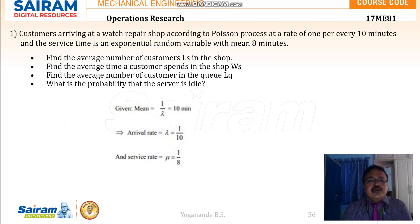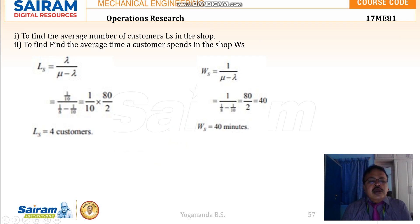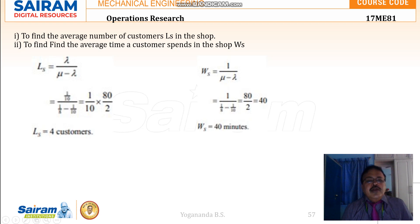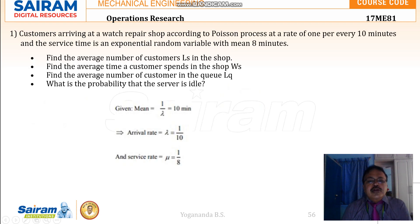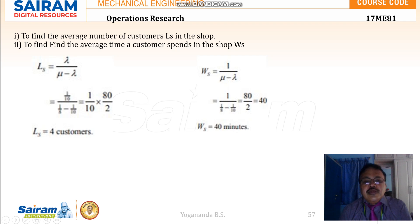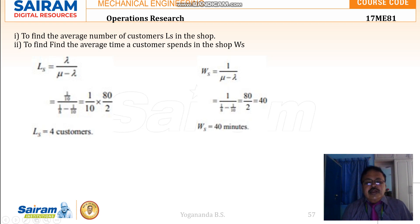To find the average number of customers, that is LS in the shop — both at the queue as well as at the service counter — LS equals lambda divided by mu minus lambda. Substituting lambda and mu values, we are getting the number of customers in the shop as four customers. Then the average time a customer spends in the shop, that is WS, is one divided by mu minus lambda. Substituting mu and lambda, we are getting 40 minutes.